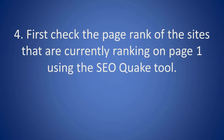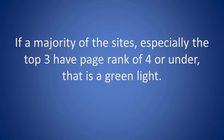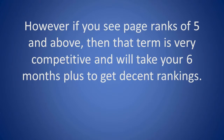First, check the page rank of the sites that are currently ranking on page one using the SEOquake tool. If a majority of the sites, especially the top three, have a page rank of four or under, that is a green light. However, if you see page ranks of five and above, then that term is very competitive and will take you six months or more to get decent rankings.